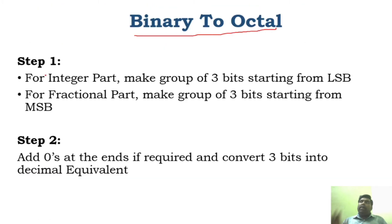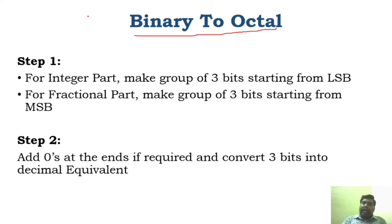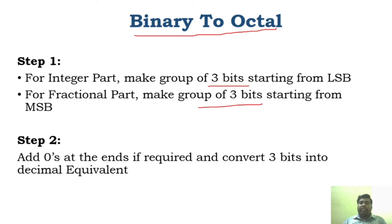To convert binary to octal, there are two steps involved. First, you need to identify the integer part and the fractional part. For the integer part, you group the bits by 3 starting from the LSB, and for the fractional part you also group by 3 but starting from the MSB.